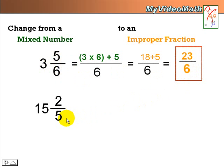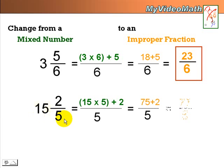This is a little tougher one because it has a larger whole number, but that's okay. The process is still the same. Let's give it a try. 15 times 5 plus 2. I'm sure you got the right answer. 77 over 5.